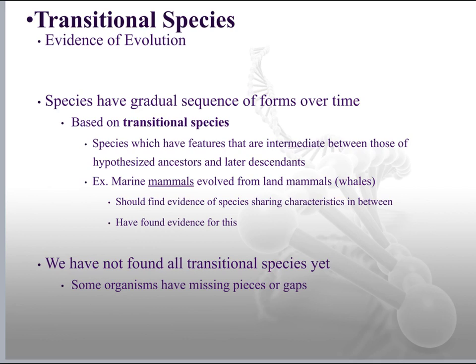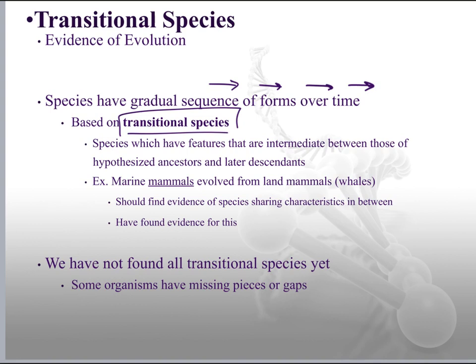The NOVA documentary we watched mentioned transitional species. Species have a gradual sequence of forms over time — they transition from one species to the next as they become closer and closer to modern organisms. These are called transitional species, and they're really what evolutionary biologists are looking for, because they're species with features intermediate between hypothesized ancestors and later descendants.